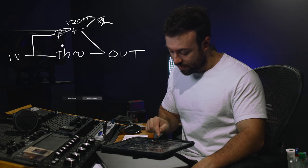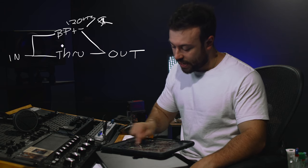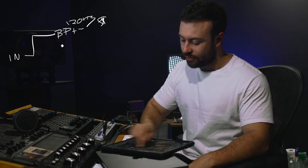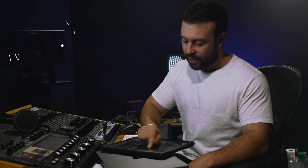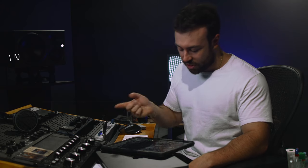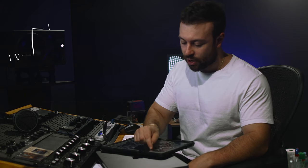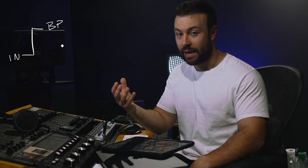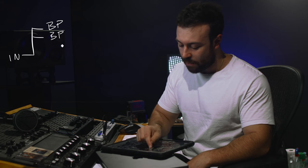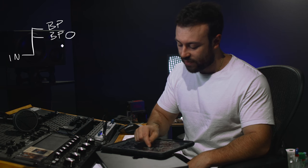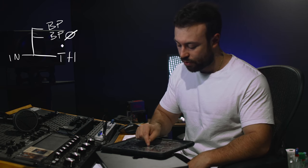Now let's look at how a dynamic EQ would differ from that. We have our input going to a bandpass, but we want this bandpass to be dynamic. So we're going to have two bandpasses — one bandpass in phase, one out of phase — and then we have our through.